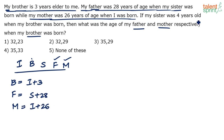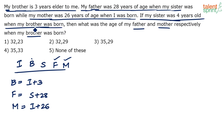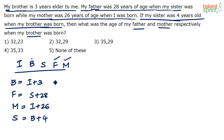If my sister was four years old when my brother was born, that means sister is four years older than brother: s = b + 4. When brother was zero, sister was four. When brother was five, sister was nine, and so on.